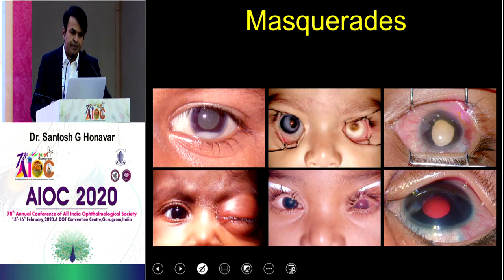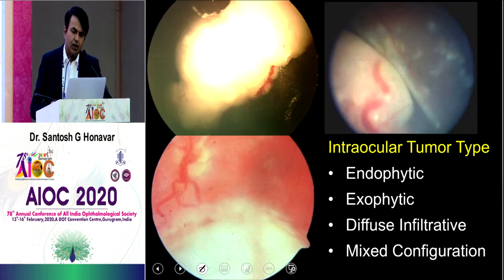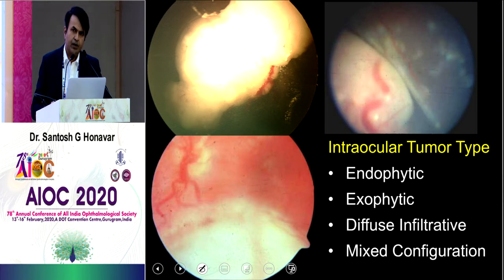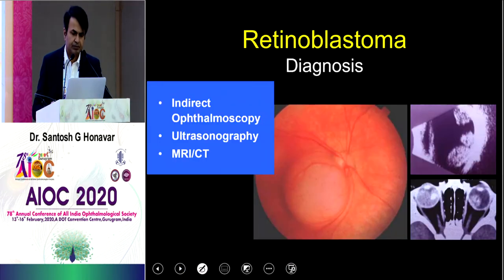There are four major tumor types: endophytic, which is most common at about 70% of children; exophytic, a little less common at about 20%; diffuse infiltrative, in very rare situations especially in older children; and mixed configuration. The straightforward way of diagnosing retinoblastoma is by indirect ophthalmoscope — that is the most common way of diagnosing RB.